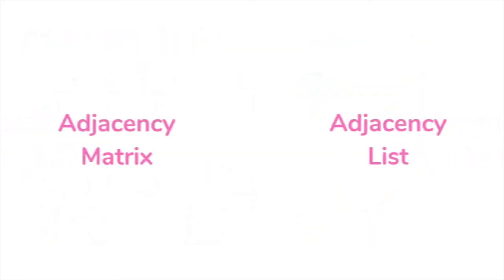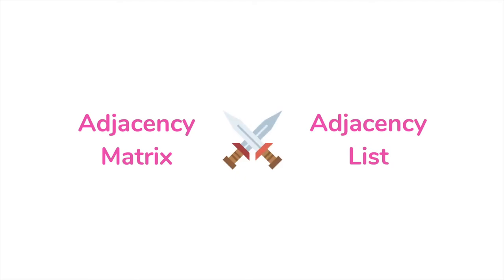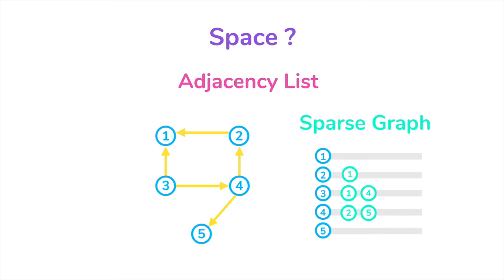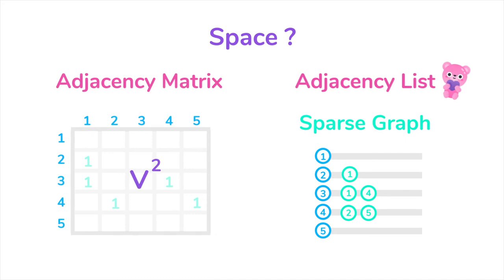Now let's compare the two: adjacency list and adjacency matrix. First of all, which one do you think would take less space? If the graph is sparse, using the adjacency list can let us save space. But for an adjacency matrix, you will always need a space for V squared, where V is the number of vertices. No matter how sparse the graph is, you'll need that much space.